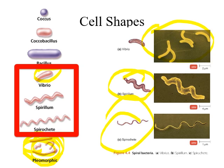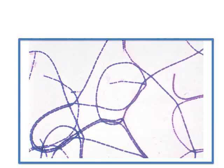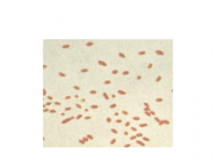Now let's do some exercises. Look at the picture and tell me what shape these bacteria are. These are bacilli — in fact this is Bacillus anthracis, which causes a blistering disease called anthrax. Notice it even has 'bacillus' in the name.